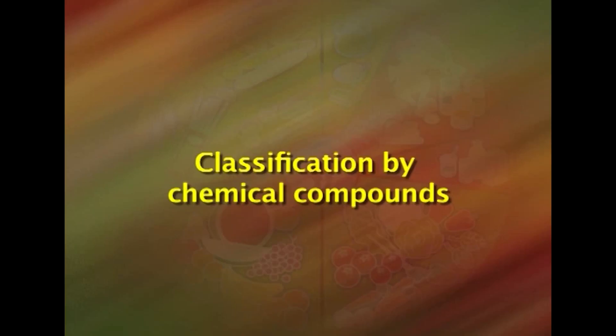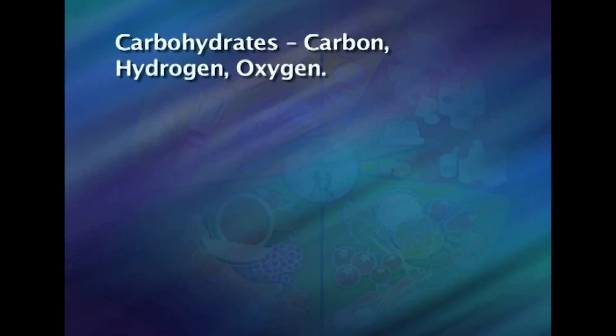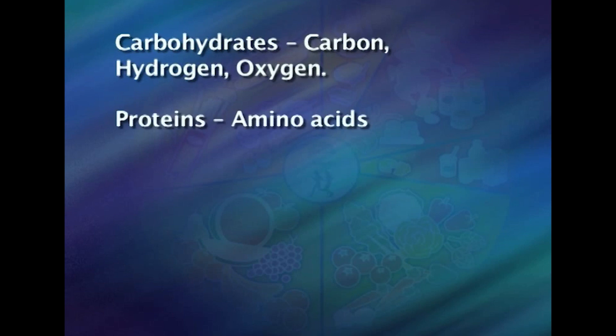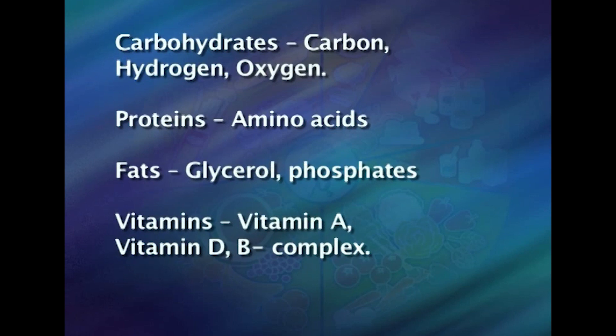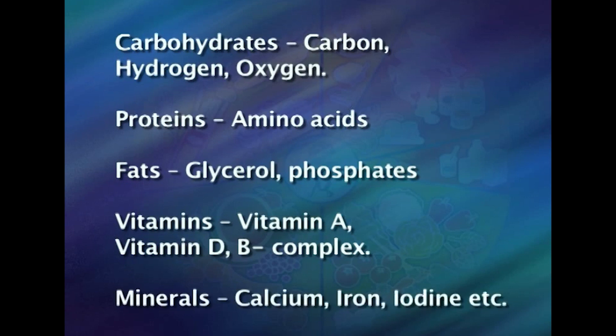The second classification of food is based on the chemical component present in the food. We have carbohydrates, which contain carbon, hydrogen, and oxygen; proteins, which contain amino acids; fats, which contain glycerol and phosphates; vitamins, classified into vitamin A, D, E, K, B complex, and vitamin C; and minerals, which include calcium, iron, phosphorus, chlorine, fluorine, and zinc.